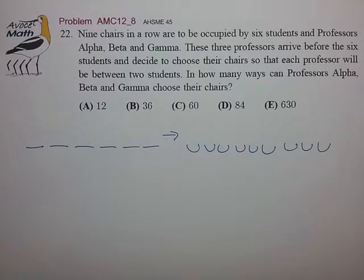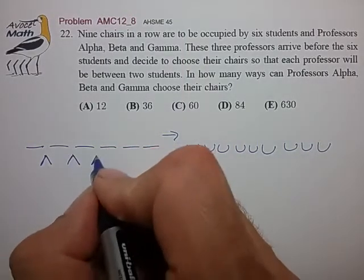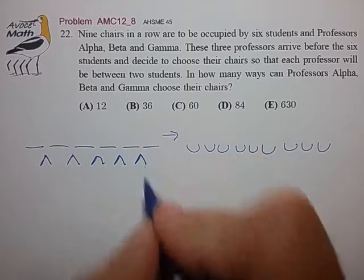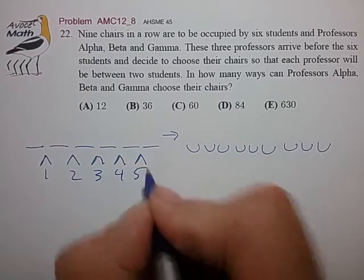And at that point we can get the insight that what we really have now is five gaps to insert the three professors. So we have gap one, two, three, four, and five.